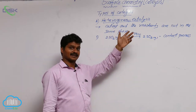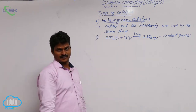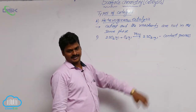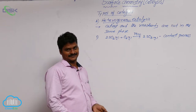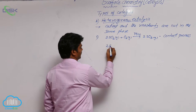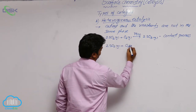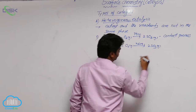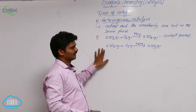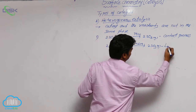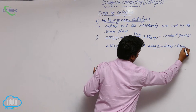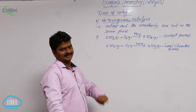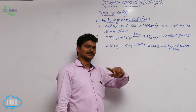Previously in homogeneous catalysis, the reaction was: 2SO2 gas + O2 gas with NO gas as catalyst → 2SO3 gas. That is the lead chamber process. In this case, all species — SO2, O2, NO — are in the gas phase, so it is homogeneous catalysis, not heterogeneous. Lead chamber process is homogeneous catalysis, whereas contact process is heterogeneous catalysis.